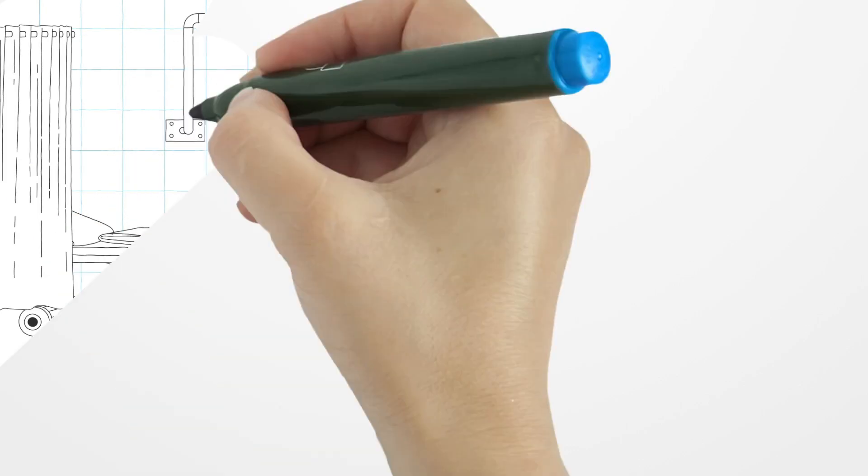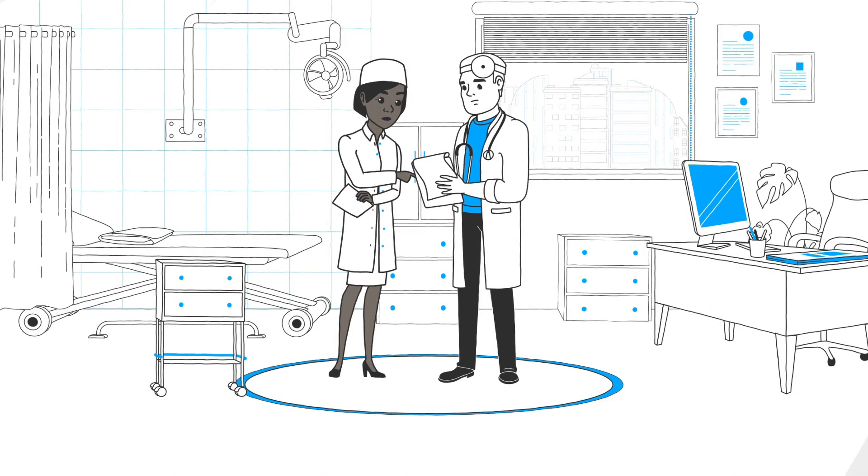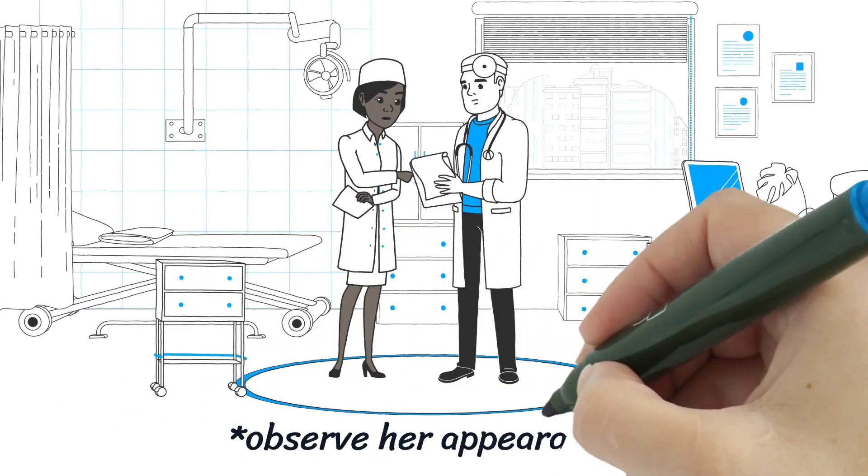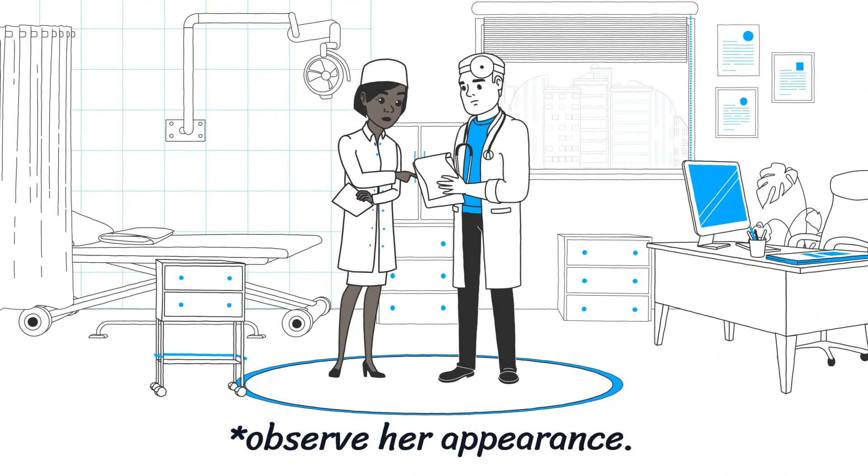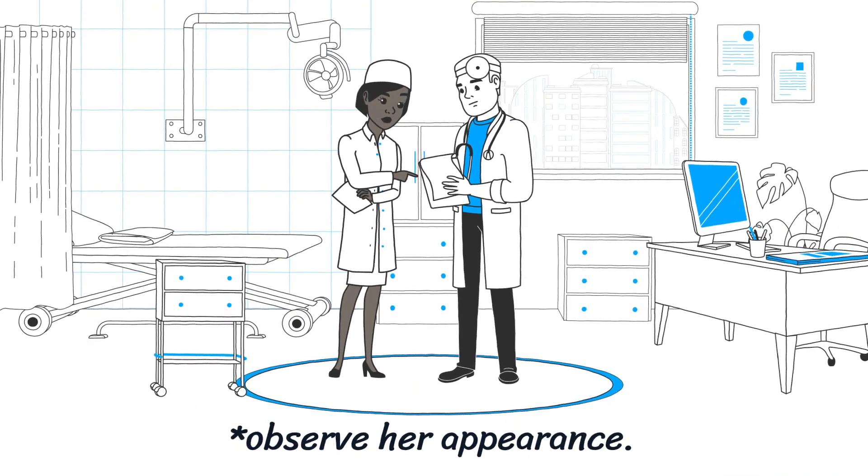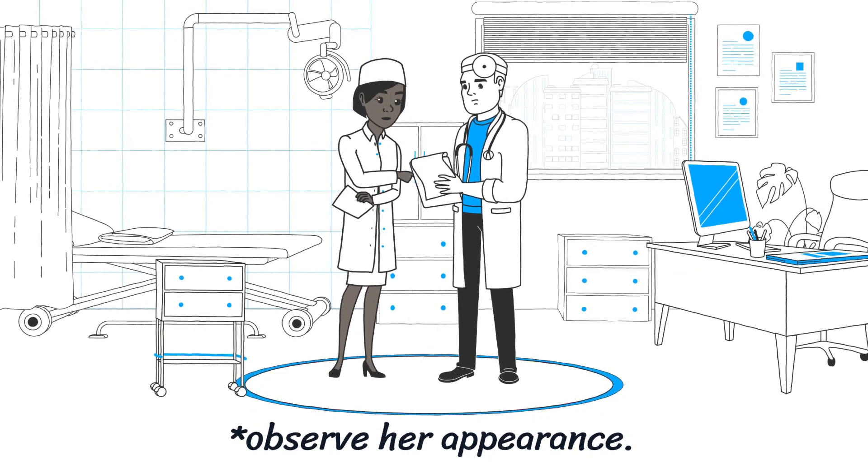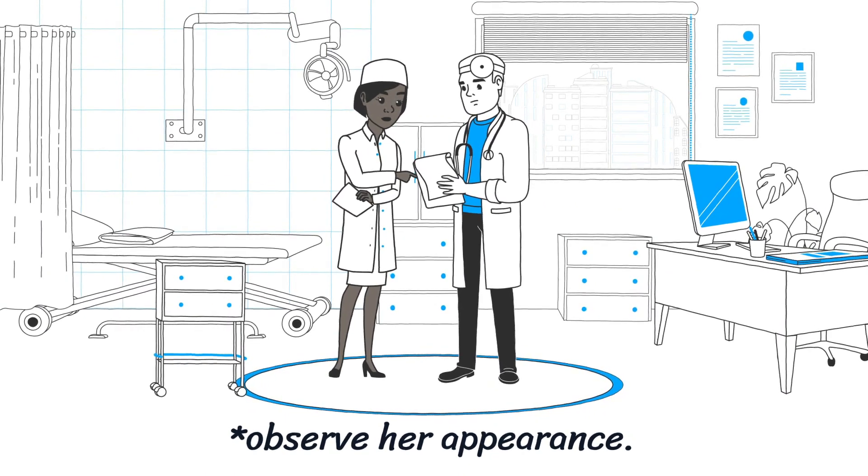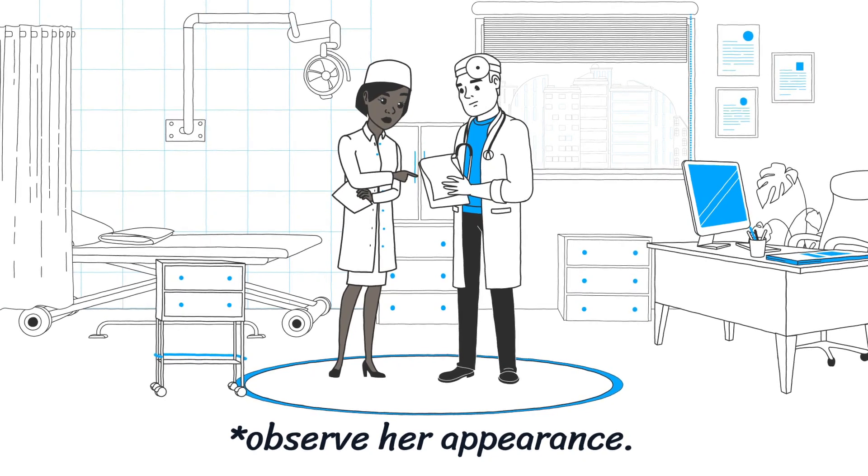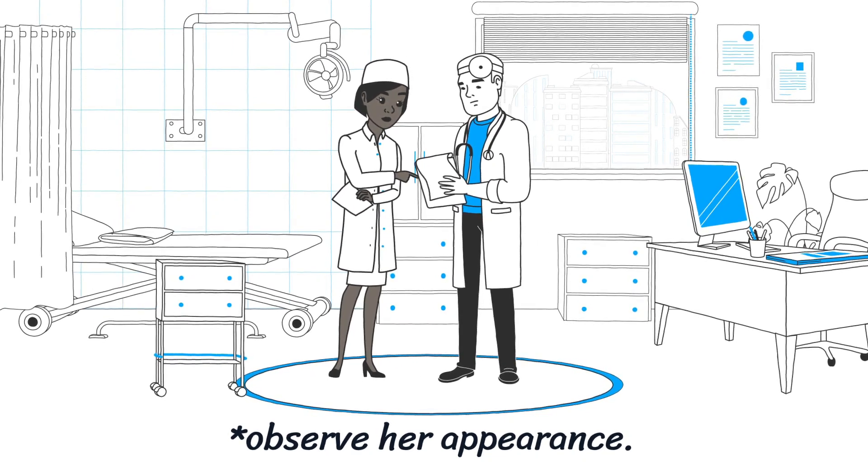Observe her appearance for secondary sex characteristics or signs of virilization. If you are responsible for performing a pelvic examination, check for anatomic aberrations of the outflow tract such as cervical adhesions or an imperforate hymen.